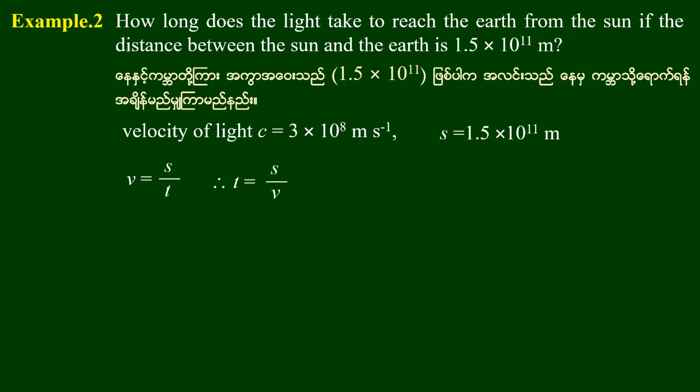Time is equal to S divided by B. So, 1.5 × 10¹¹ divided by 3 × 10⁸ is equal to 500 seconds, which is equal to 8 minutes and 20 seconds.